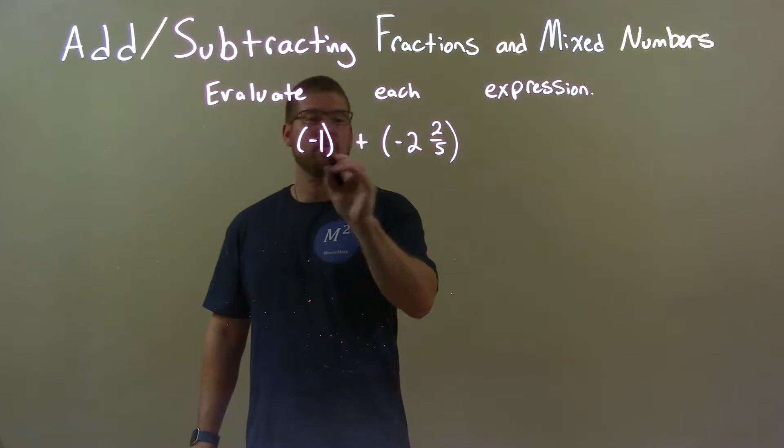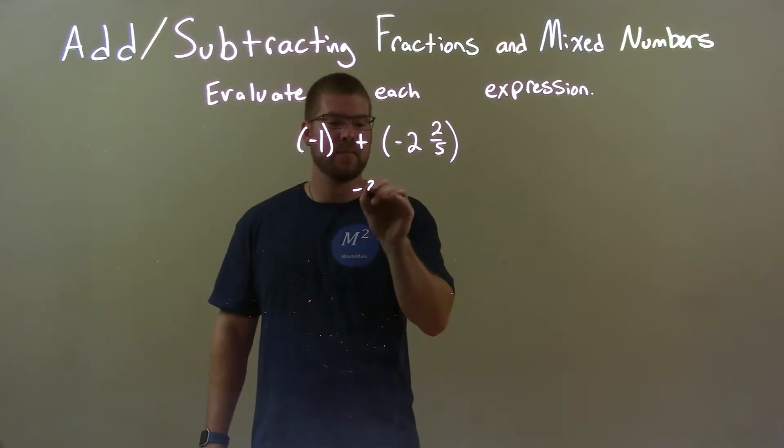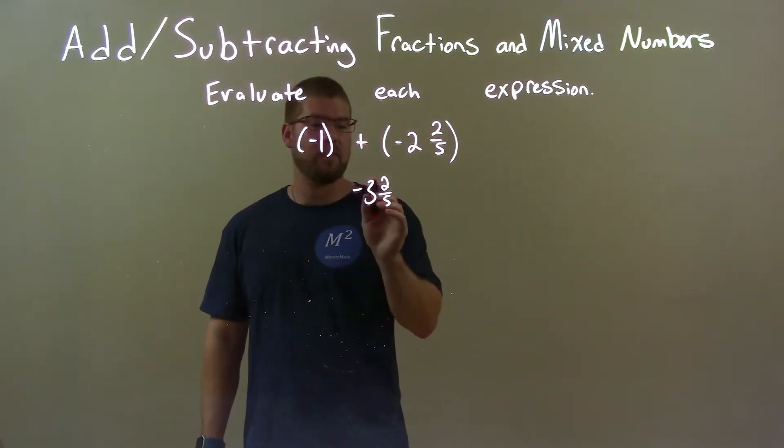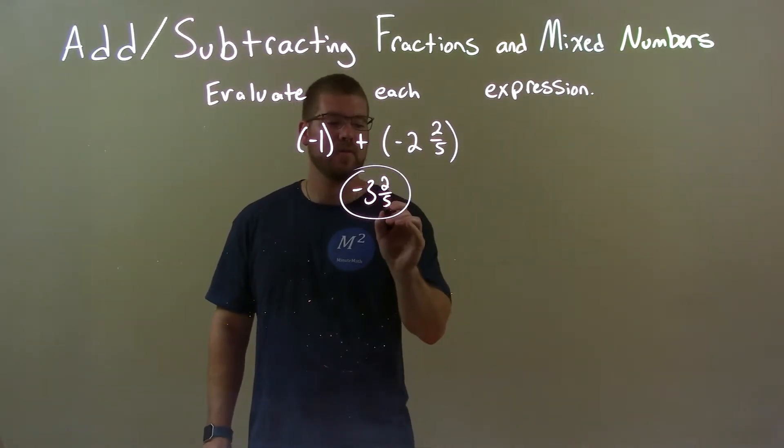We're going to combine the negative 1 and the negative 2 which would be a negative 3 and keep the 2 fifths in there. And so, that's all we have. Our final answer is negative 3 and 2 fifths.